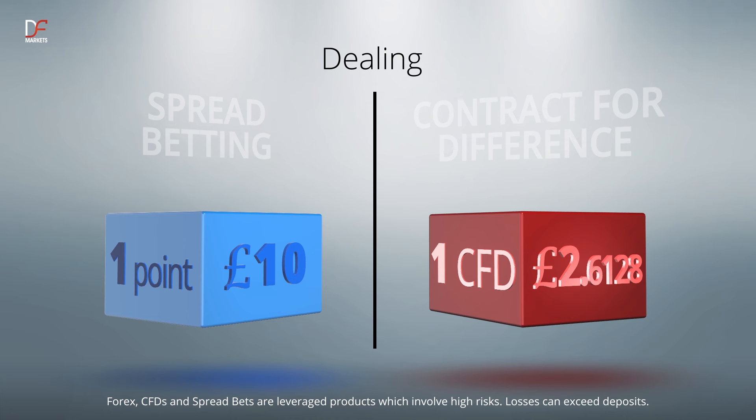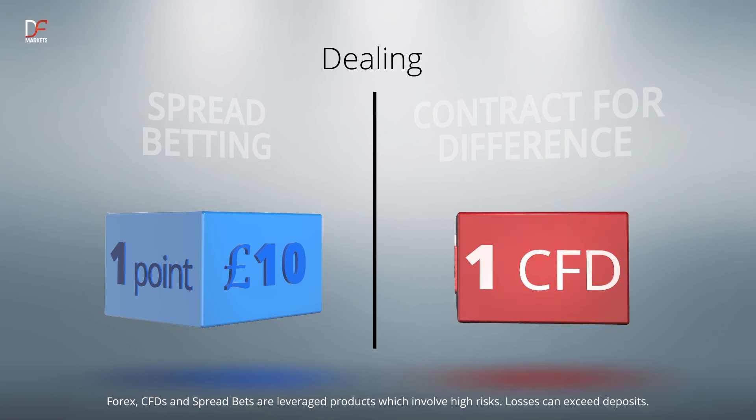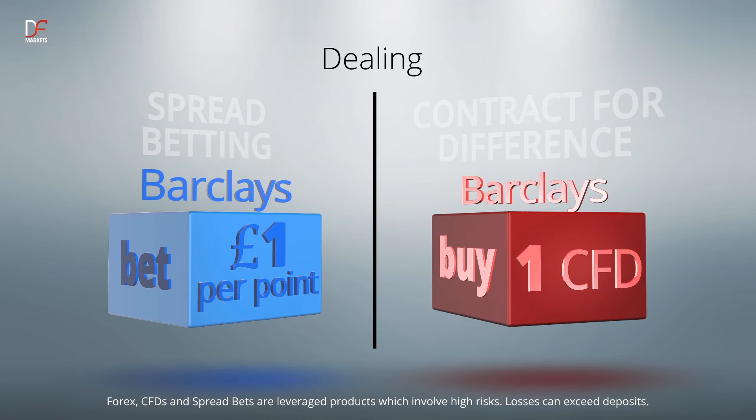For example, when opening a CFD position in Barclays, you're buying one Barclays CFD. However, when opening a spread betting position, you are betting Barclays at £1 per point.